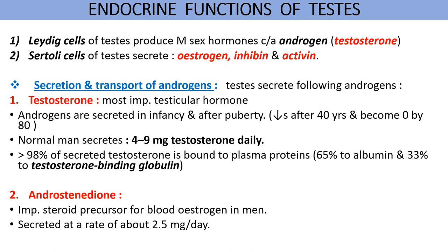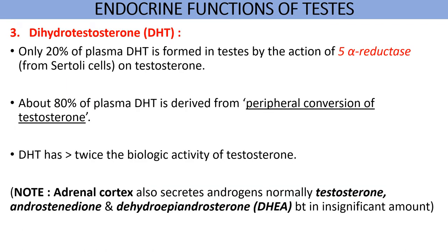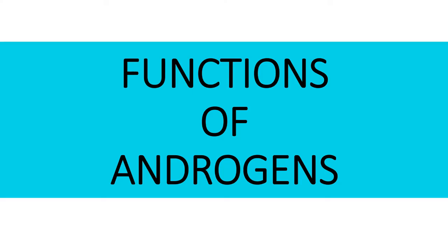Androstenedione is a precursor for estrogen in men. The next important androgen after testosterone is dihydrotestosterone (DHT), which has greater than twice the biological activity of testosterone. Only 20 percent of plasma DHT is formed in the testes by the action of the enzyme 5-alpha reductase on testosterone, while 80 percent of DHT is derived from peripheral conversion of testosterone.